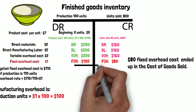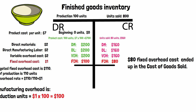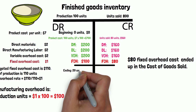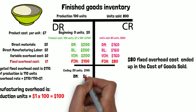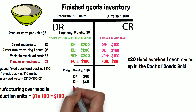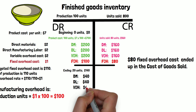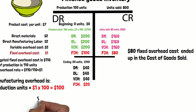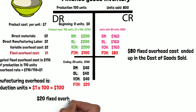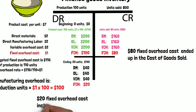Now let's take a look at the ending inventory. The ending inventory is production minus units sold. We have direct materials $40, direct labor $40, variable overhead $40, and fixed overhead $20. This is the cost sitting in the ending inventory, so $20 fixed manufacturing overhead cost is included in the ending inventory.